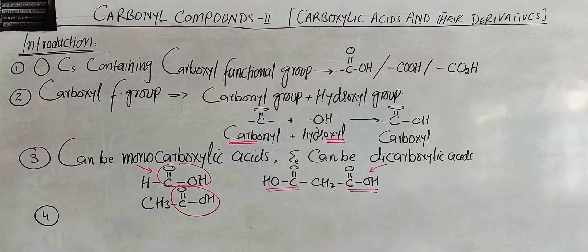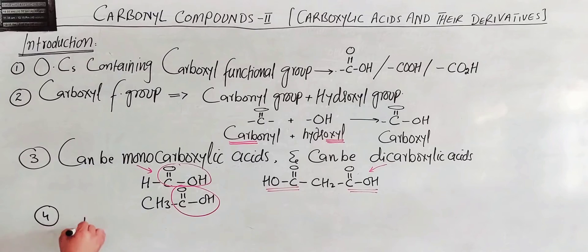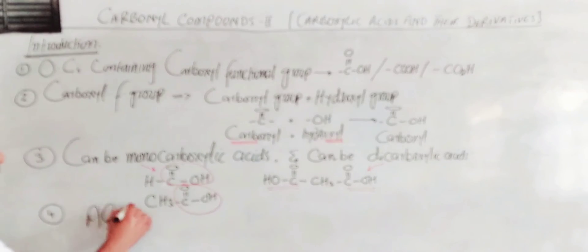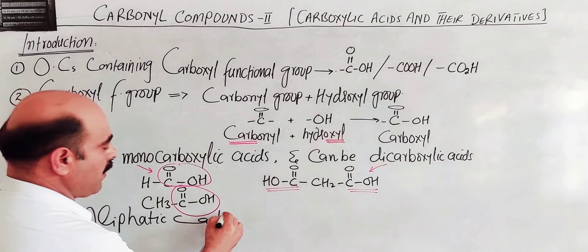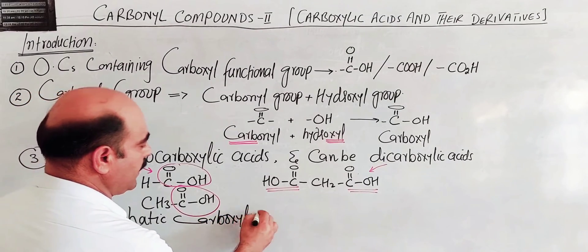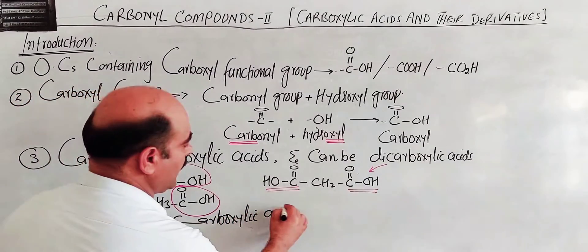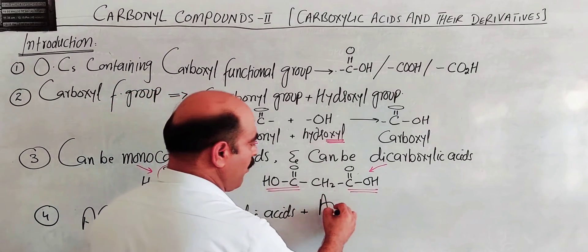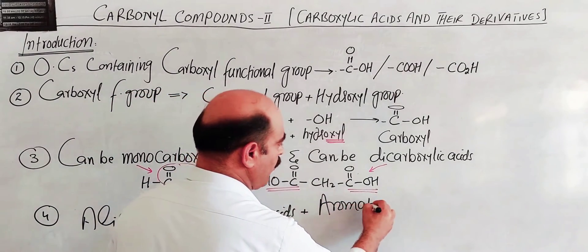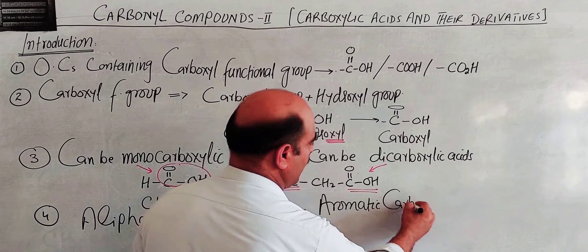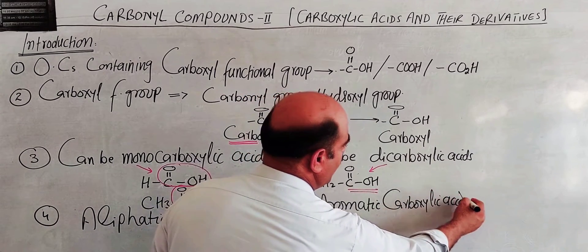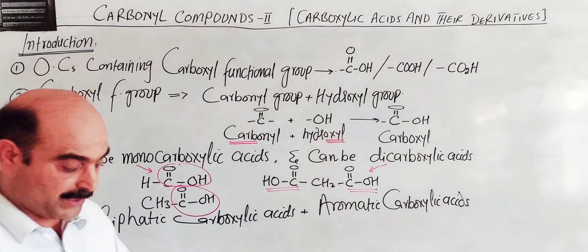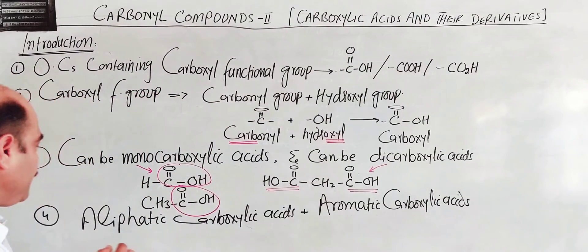Carboxylic acids can also be classified as aliphatic or aromatic. Aliphatic carboxylic acids have an open chain structure, while aromatic carboxylic acids contain an aromatic ring attached to the carboxyl group.